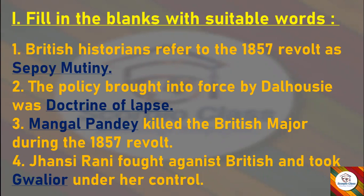Next: Dash killed the British major during the 1857 revolt — answer: Mangal Pande. Next: Jhansi Rani fought against the British and took dash under her control — answer: Gwalior.